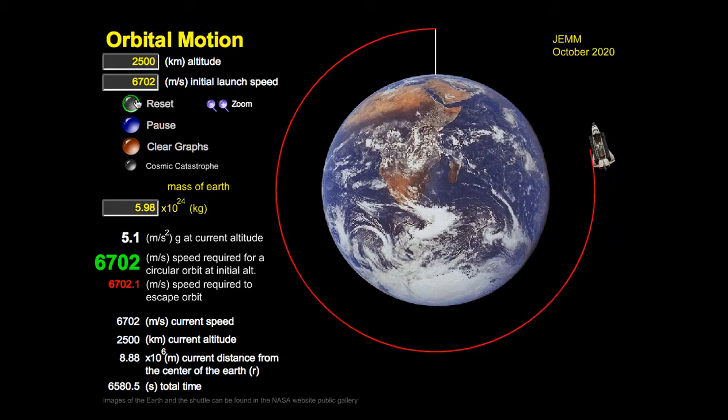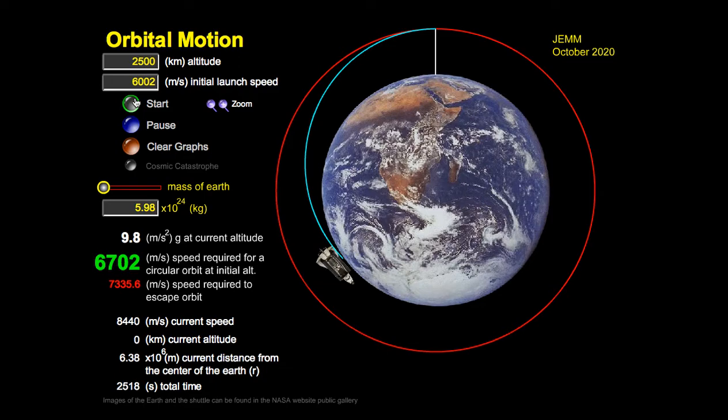And notice for that specific speed, the object orbits in a circle. And the question you may be asking yourself is, how does this simulation figure out that speed? If we dial in a lower speed, it's no longer circular. And in fact, the object crashes into the Earth.